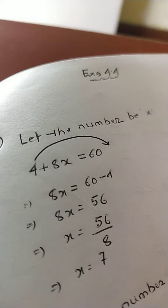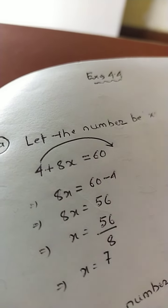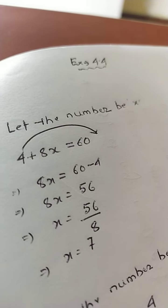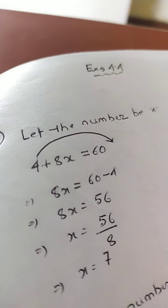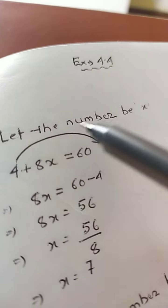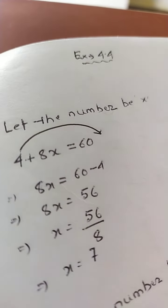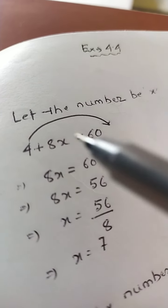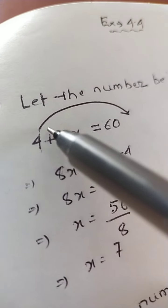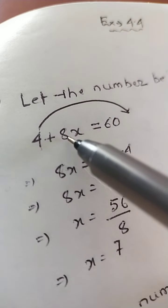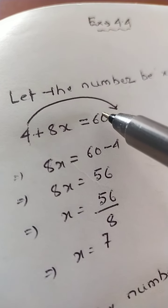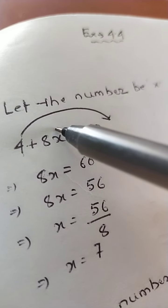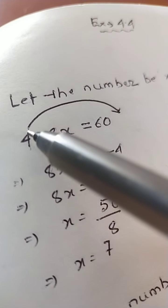Sum number (a): Add 4 to 8 times a number and you will get 60. We are not aware of the unknown number, so we let the number be x. We set up the equation: add 4 to 8 times the number, that is 8x, so 8x + 4 = 60.